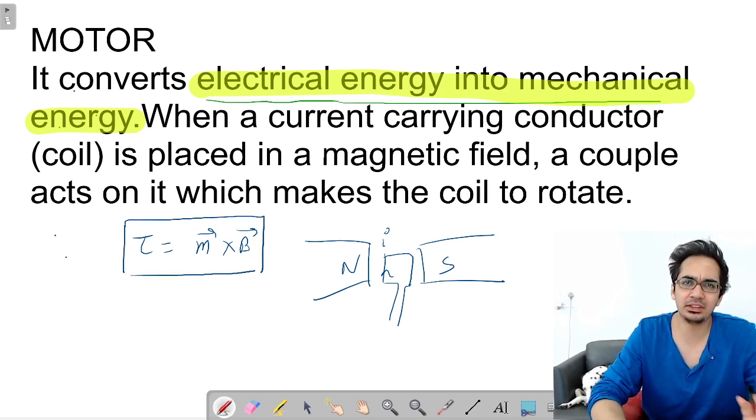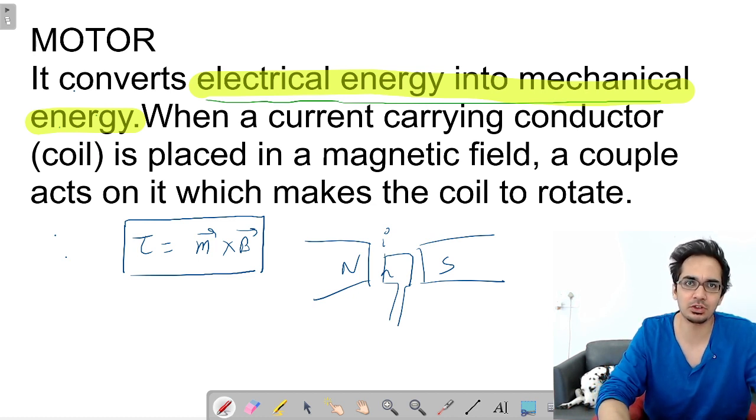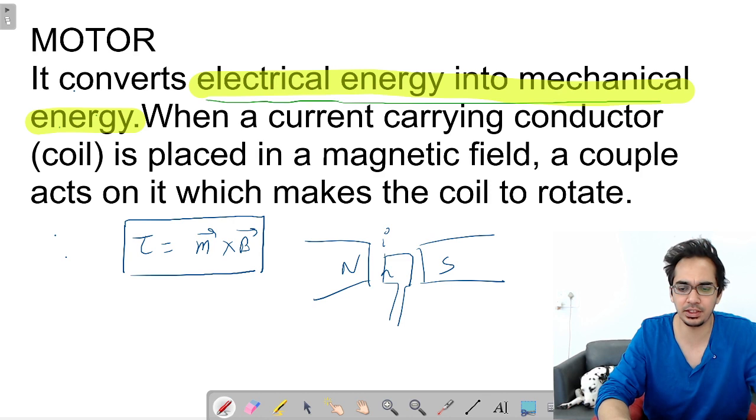This is the electric motor — the basic functionality of it. The current carrying coil in a magnetic field experiences a torque, because of that it starts rotating.